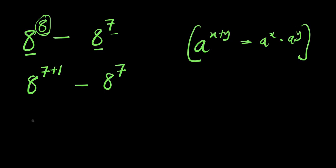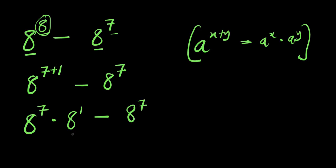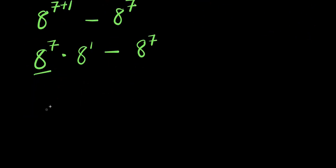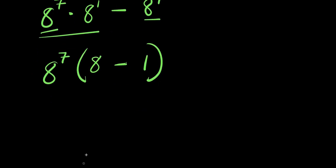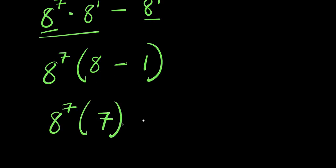So I will have a^7 times a^1 minus a^7. I can factor out a^7, so we have a^7 times (a^7 divided by a^7), minus a^7 divided by a^7, which gives 1. So from here I have a^7 times (8 minus 1), and this is 7. So the expression simplifies to 7 times a^7.